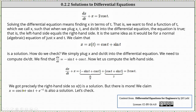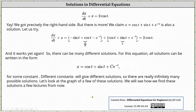But there is more. We claim that x equals cosine t plus sine t plus e to the power of negative t is also a solution. Let's check. Again, we have to determine dx/dt. Well, dx/dt is equal to the derivative of cosine t plus sine t plus e to the power of negative t, which gives us negative sine t plus cosine t minus e to the power of negative t.